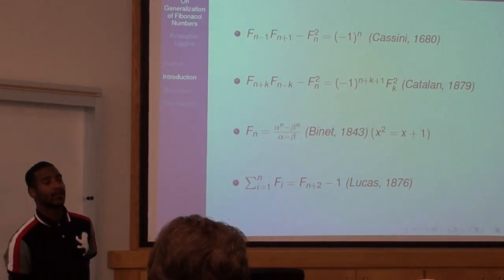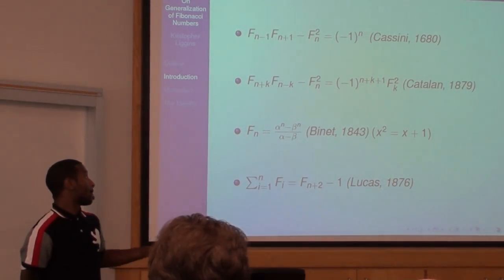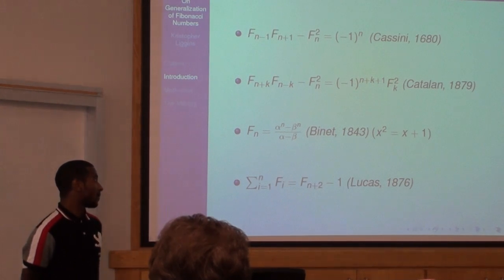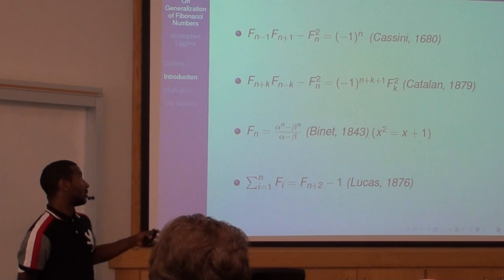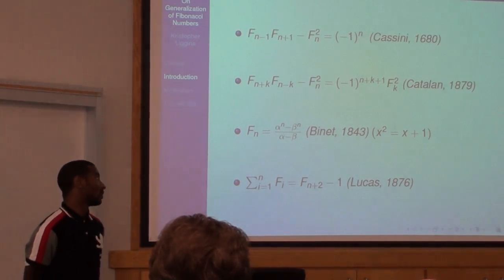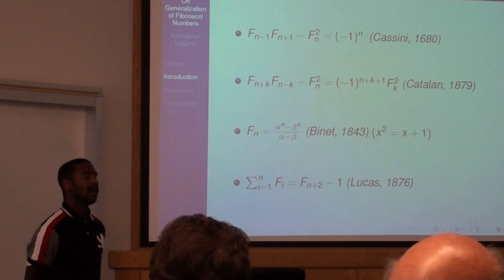Because there are many real-world applications of these Fibonacci numbers, many identities have been discovered and proven. Some of these by Cassini in 1680, Catalan in 1879.